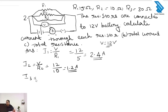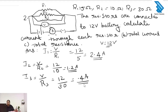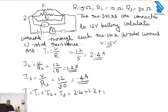Next we find I3, the current through R3. The total current IE is equal to I1 plus I2 plus I3. The total current I equals 4 ampere.